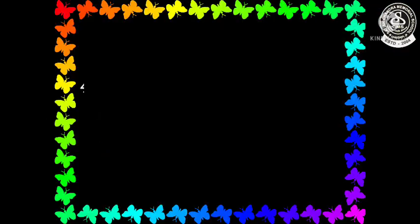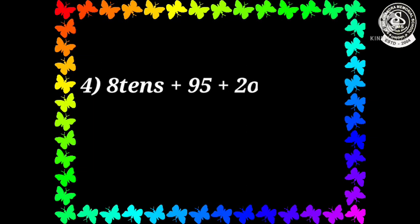Now let us see question number 4: 8 tenths plus 95 plus 2 ones. That means first you have to change all the digits into numbers and then you have to find out the answer.